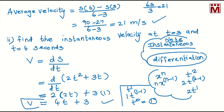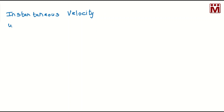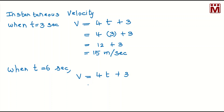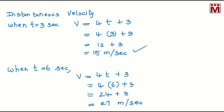The instantaneous velocity is v equal to 4t plus 3. We substitute t equal to 3: v equals 4 into 3 plus 3, so when time equals 3 seconds, instantaneous velocity is 15 meters per second. When time equals 6 seconds, instantaneous velocity equals 4 into 6 plus 3, giving 27 meters per second. These are the instantaneous velocities at t equal to 3 and t equal to 6 seconds.